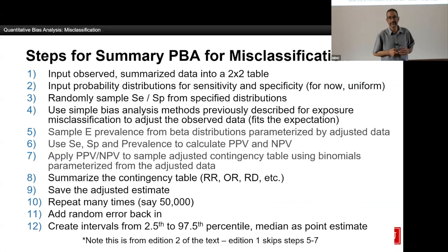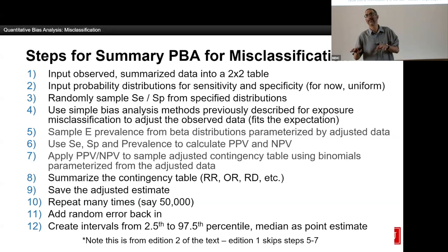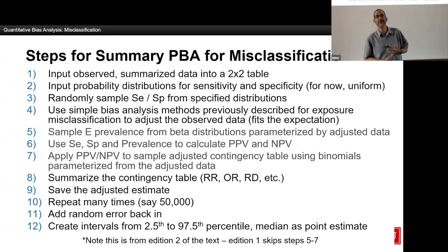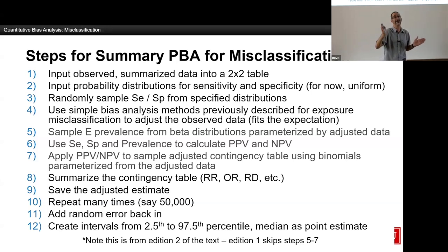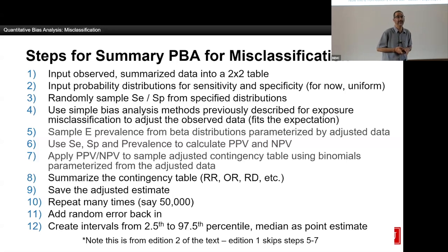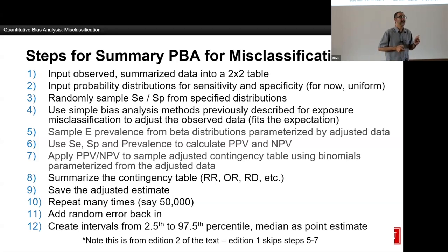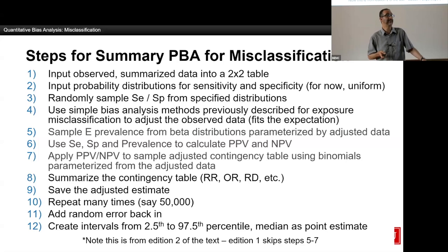So here's what we do for probabilistic bias analysis. I start off with a summary two-by-two table and put in some distributions around the bias parameters. Let's think of those as uniform distributions — just give me a range. For Aliza's data, I think the sensitivity was somewhere between 0.2 and 0.5, and I think the specificity was between 0.98 and 1.00. Then I randomly choose values of sensitivity and specificity, take those values, and turn the observed data — that summary two-by-two table — into a bias-adjusted analysis using the values of sensitivity and specificity I just drew.